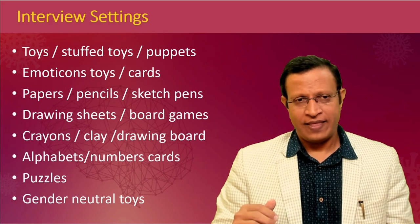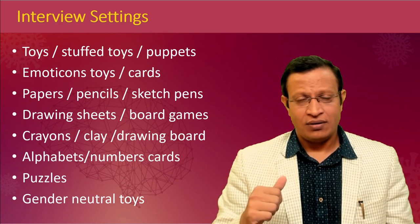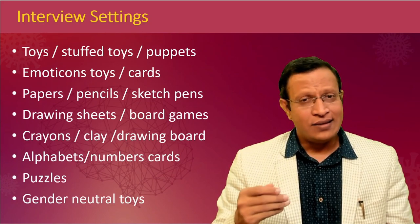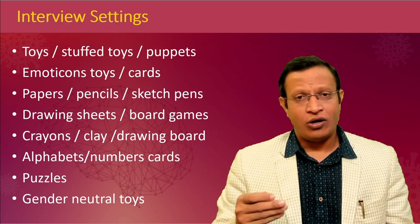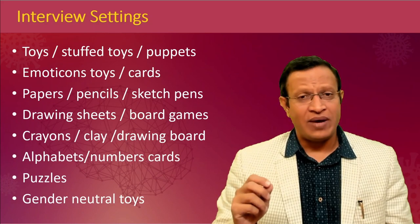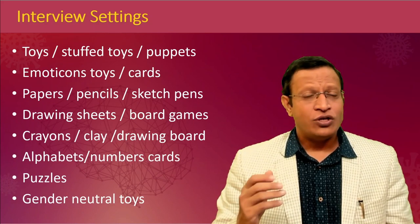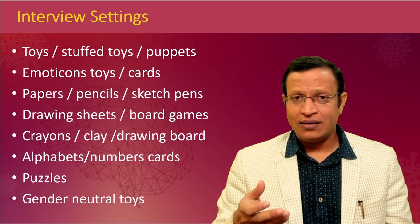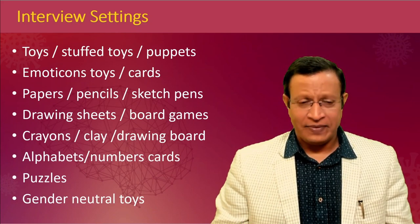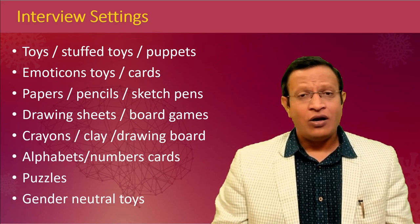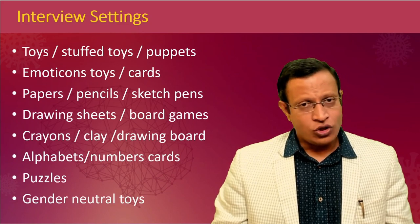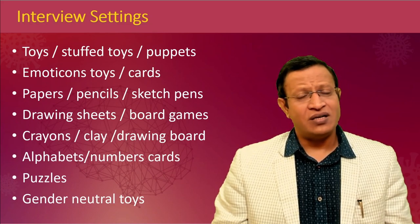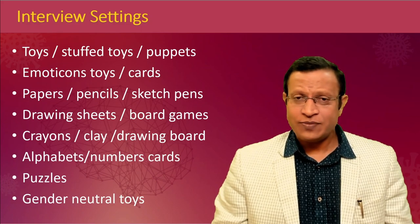In the interview room, you need to have certain toys: stuffed toys, puppets, emoticons, toys, and cards. Emoticons or smileys — which younger children and adolescents are familiar with from mobile phones — can help ask whether they are happy, sad, or frustrated. Paper, pencil, sketch pens, drawing sheets, drawing board, board games, color chalk pieces, crayons, clay, alphabet cards, number cards, and puzzles — preferably gender-neutral choices — are all very useful to assess various aspects of the child.